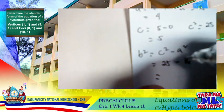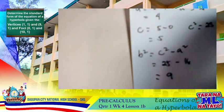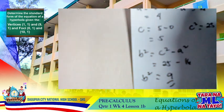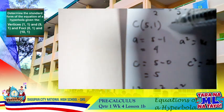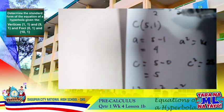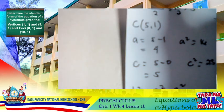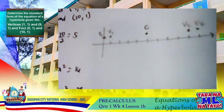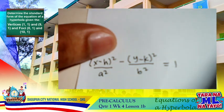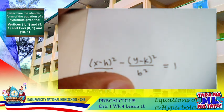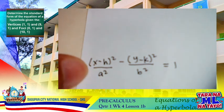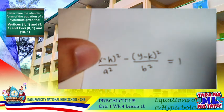So b² = 9, a² = 16, and the center is (5, 1). We have completed all the values needed for the equation. Since it is a horizontal hyperbola, we use the standard form: (x − h)² / a² − (y − k)² / b² = 1.